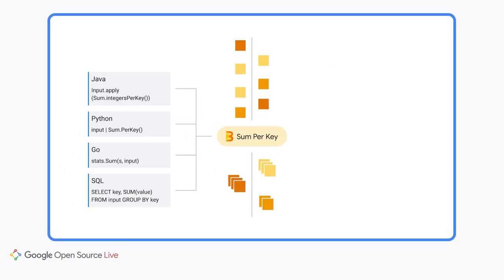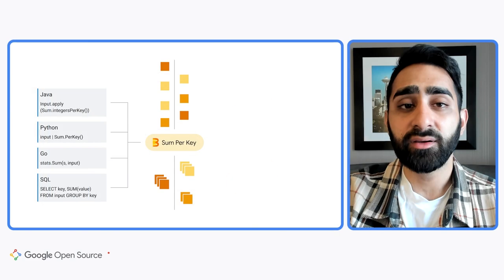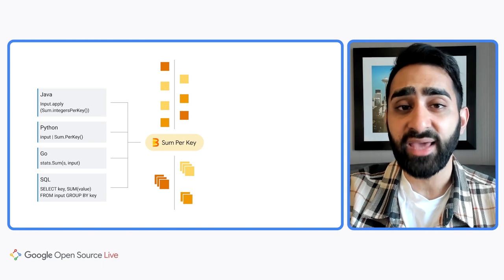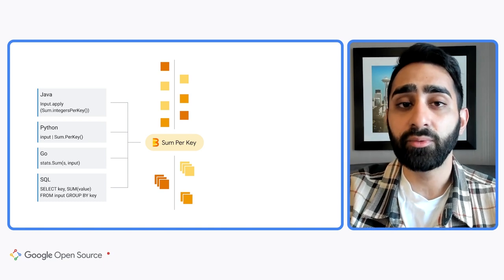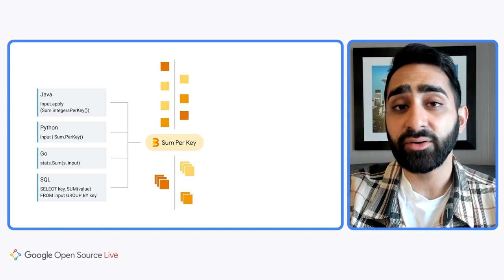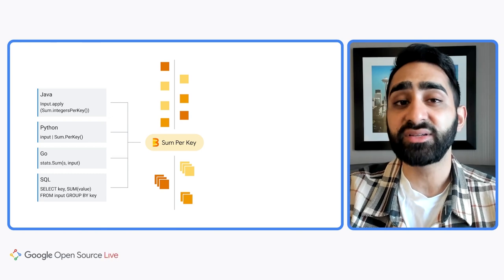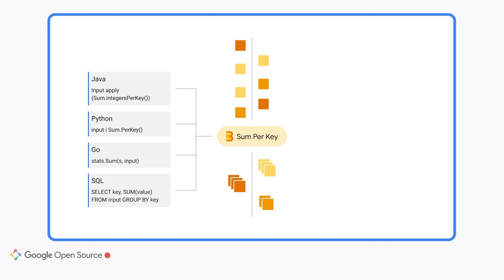If you come from the world of Lambda architectures, which required users to operate both a batch and streaming stack and do a messy reconciliation between the two, you no longer have to worry about operating two different stacks. Not with Beam — all you have to do is write the pipeline once and you can use that over and over again. Secondly, developers only have to write once. Your team might have different preferences for programming languages, and now you don't have to choose. Apache Beam supports a variety of programming languages from Java to Python to Go and SQL.